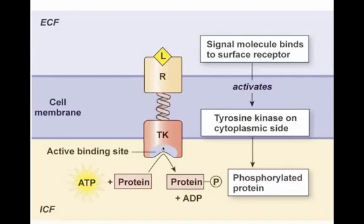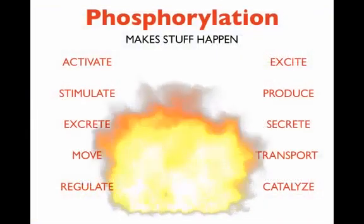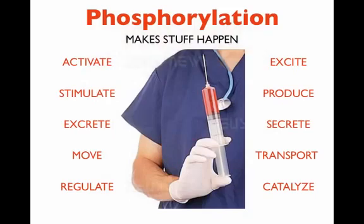What tyrosine kinase does is it binds a protein and ATP at its active site. It uses the energy from ATP, and it also uses that phosphate that gets stripped off, and it phosphorylates this protein. ADP is left over and released. When you see this phosphorylation, I want you to get really excited because phosphorylation makes stuff happen. Anytime you see things being phosphorylated, it means that the cell is activating — doing something, making things, excreting things, it can move, it turns on ion channels, it gets excited, it sends a signal, it contracts, it catalyzes other reactions. Phosphorylation is a really big deal.